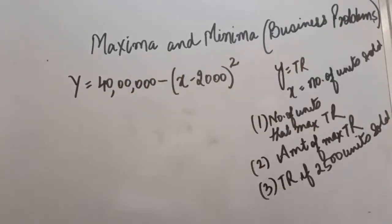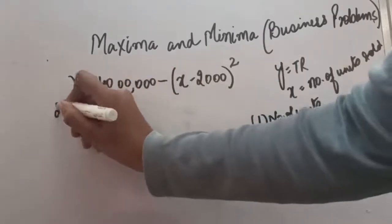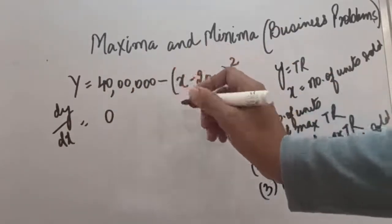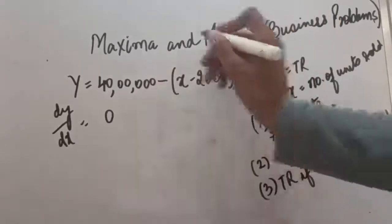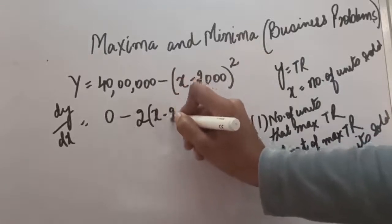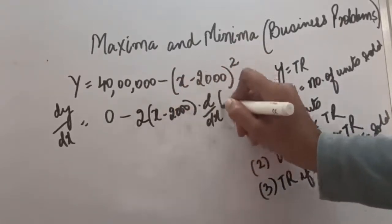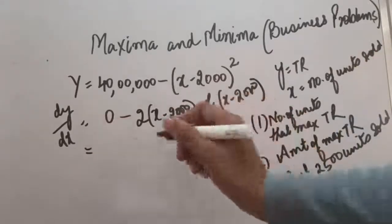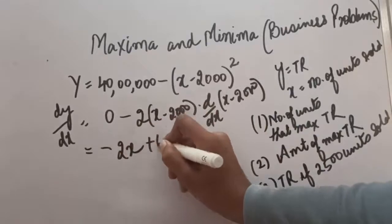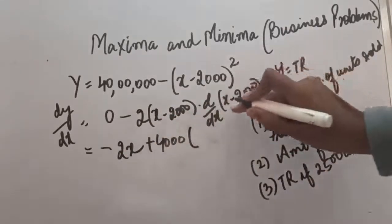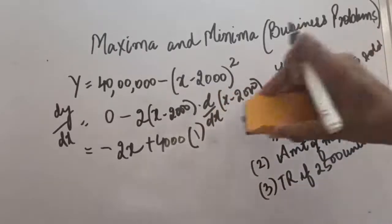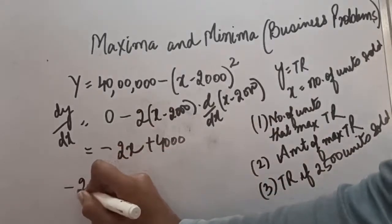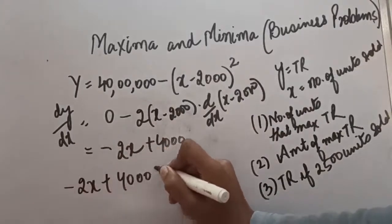We are going to apply the maxima minima method. First, we take the derivative. The derivative of 40 lakh will be 0. Opening the bracket with the formula, minus 2 will come in front, so it will be x minus 2000 into the derivative of x minus 2000. This gives minus 2x plus 4000, multiplied by the derivative of x which is 1. So this is the derivative we got.